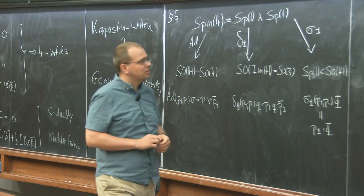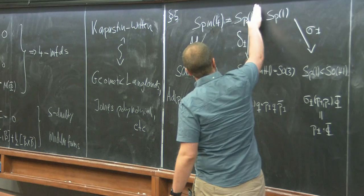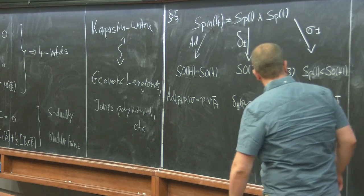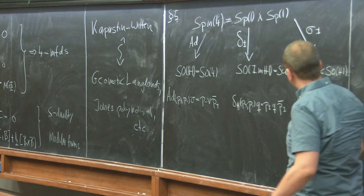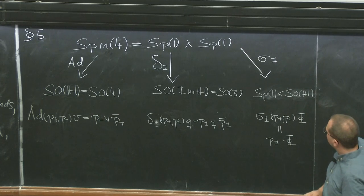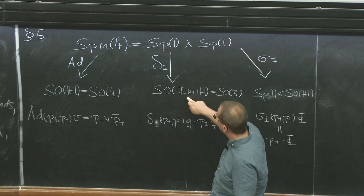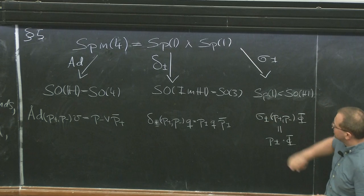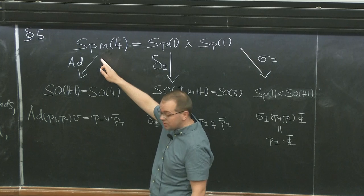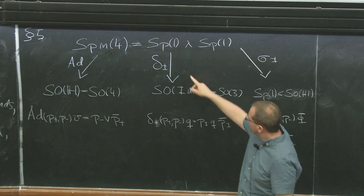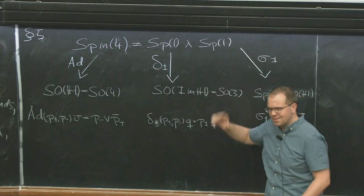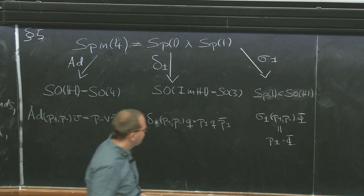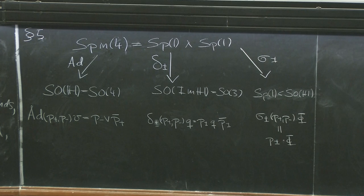There are two spinor representations — the obvious ones. You can project onto the first factor, mapping (p⁺, p⁻) to p⁺, and then left-multiply by φ. These are the spinor representations. There's also another representation in dimension three that comes from taking the adjoint of one of those. I call Δ the spinor representation and σ± for the adjoint representations.